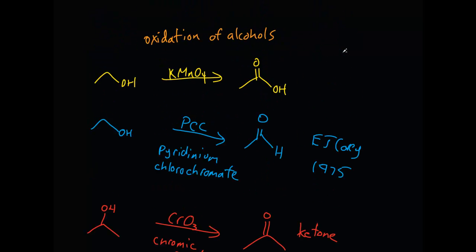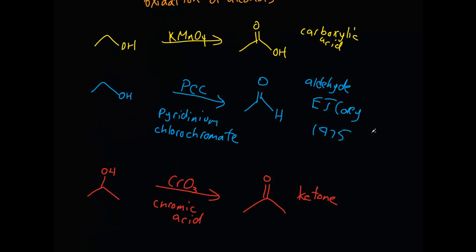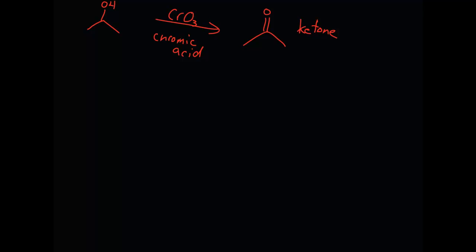So let's write that in: carboxylic acid, aldehyde, ketone. Next, after the primary and secondary alcohol, there's just one left — tertiary. Tertiary alcohols have no alpha hydrogens, which is actually a requirement of the oxidation reaction. So if we try to oxidize a tertiary alcohol, we're going to get no reaction.